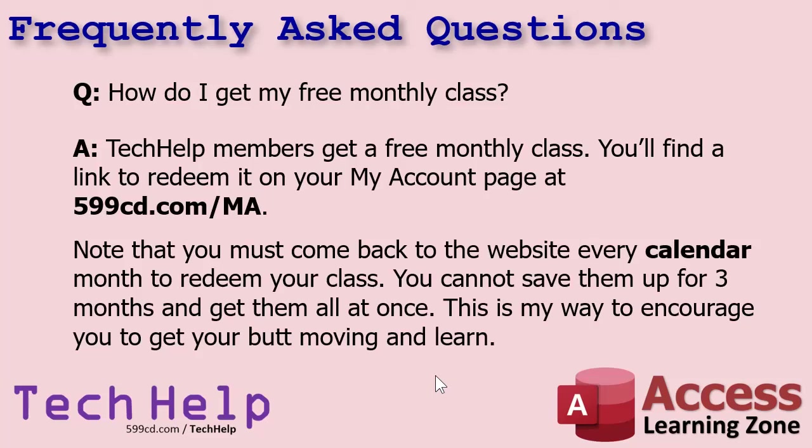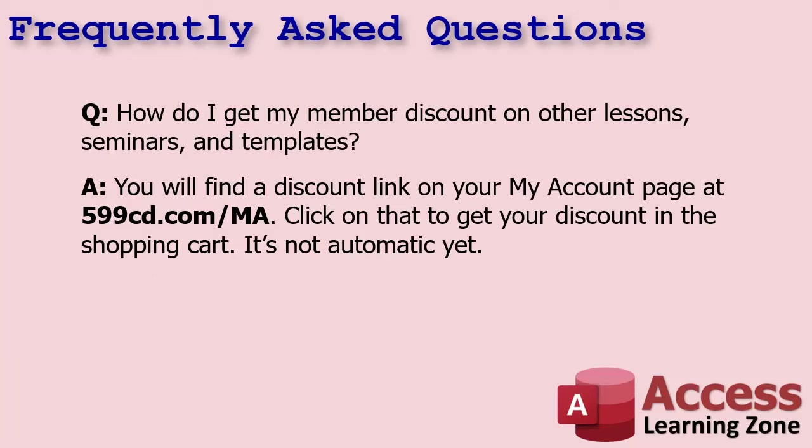For example, if you're a Silver member, you only get free beginner classes. Once you finish Access Beginner 9, it'll switch you over to Excel and then Word. If you want to get expert level classes, you can upgrade to Gold — for about four dollars a month, it's totally worth it just for the free class.